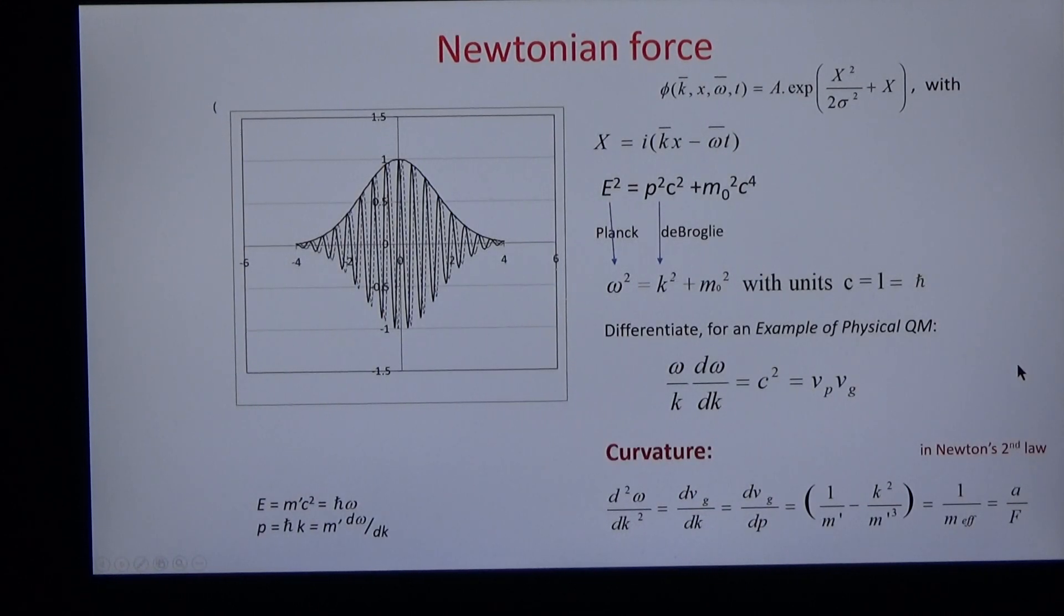Before I discuss spin, I have to cover two further basis force and uncertainty. If we differentiate this not once but twice, we find that the curvature is the inverse of the effective mass and with Newton's second law, it's due to acceleration over force.